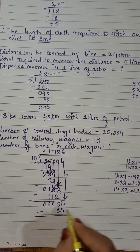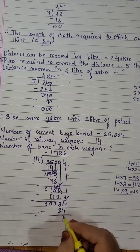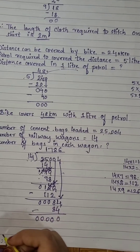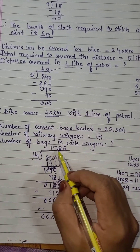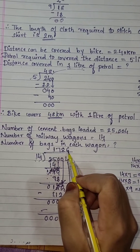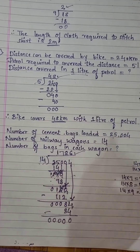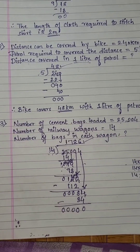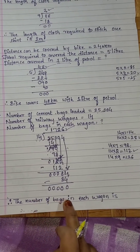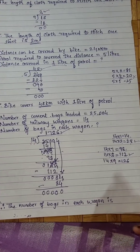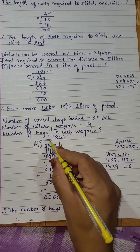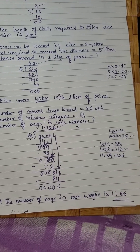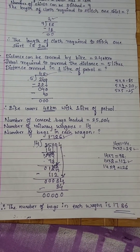So what is your answer? 1,786 is your answer. Therefore the number of bags in each wagon is 1,786. This is your answer. Understood children? Very good.